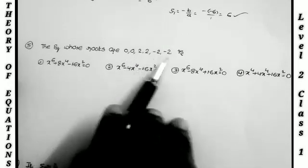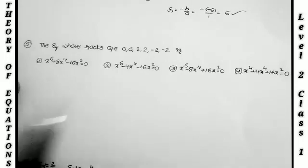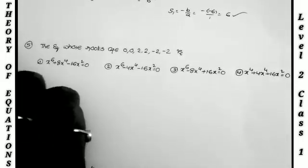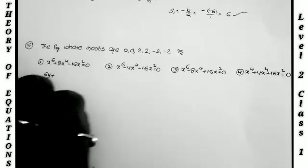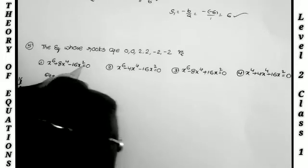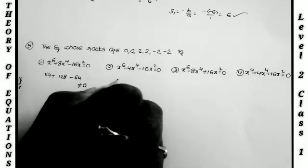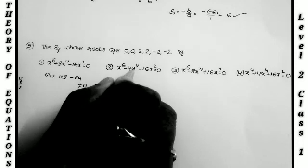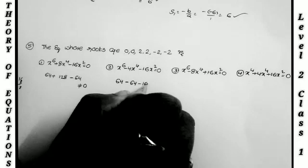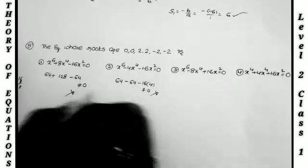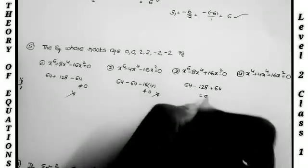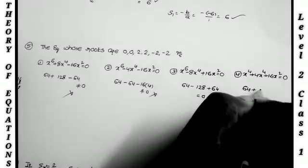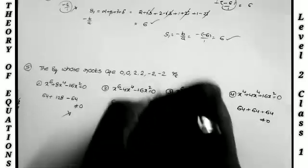The equation whose roots are 0, 0, 2, 2, minus 2, minus 2 — again using options verification. Since 0 is satisfied by all options, substitute x equals 2: 2⁶ is 64. Checking option 1: 64 plus 8 into 16 minus 16 into 4 is not equal to 0. Option 2: 64 minus 16 into 4 minus 64 is not equal to 0. Option 3: 64 minus 8 into 16 plus 16 into 4 equals 64 minus 128 plus 64 equals 0. Option 4 gives 64 plus 64 plus 64, not zero. Only option 3 is the correct answer.